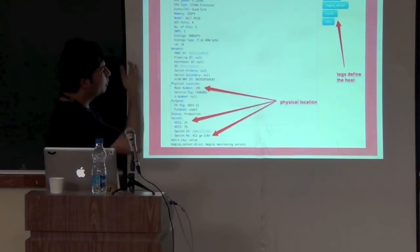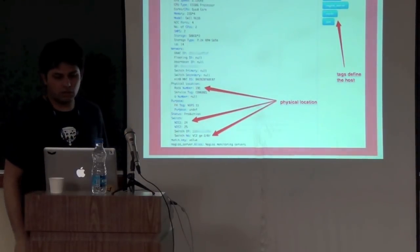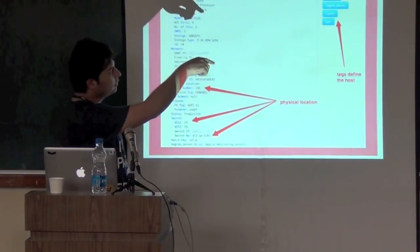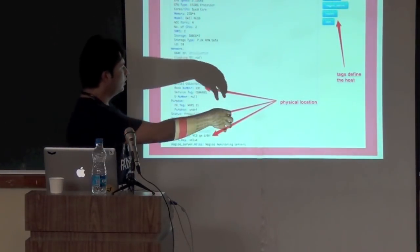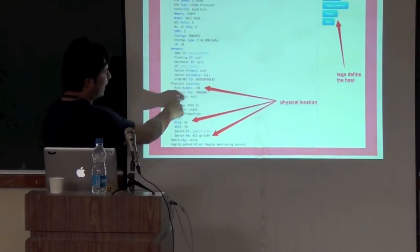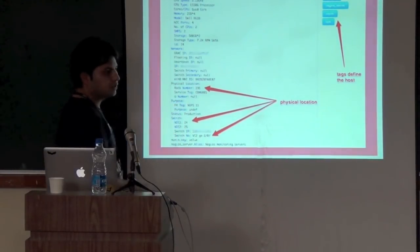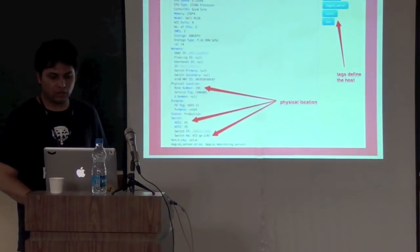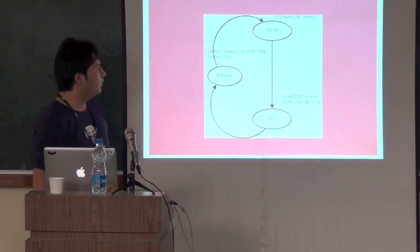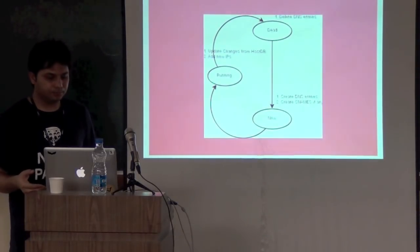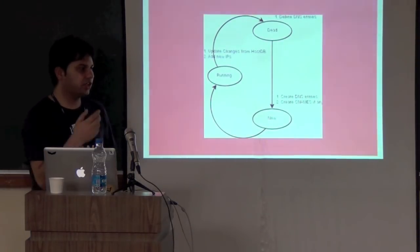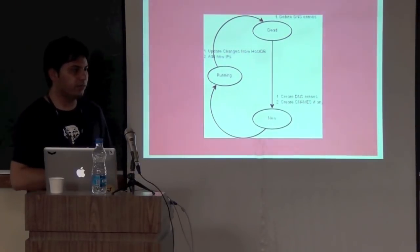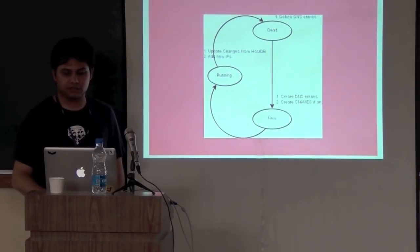This is an example of an even more complex host DB entry. The tags define what the host does, and it also records the physical location — rack number 191, NIC card connected to port 24. All those details are there so you can always physically locate the machine. DNS does the same thing — it polls the host DB and creates DNS entries and CNAMEs in the same manner.